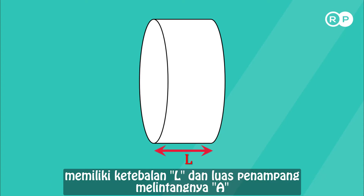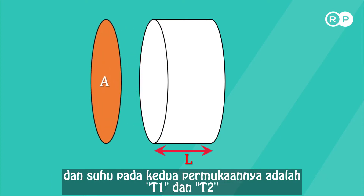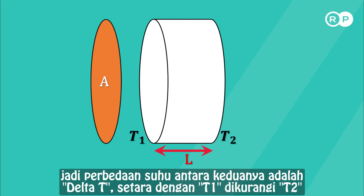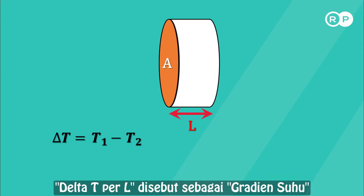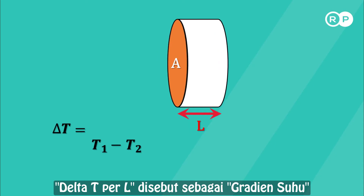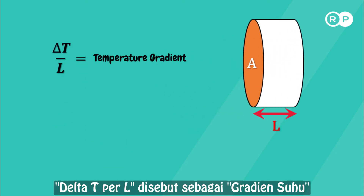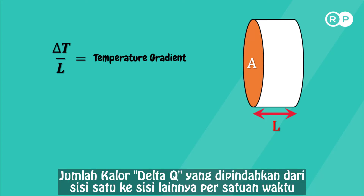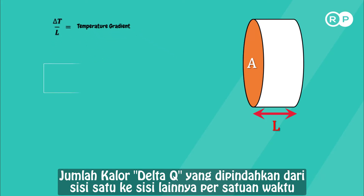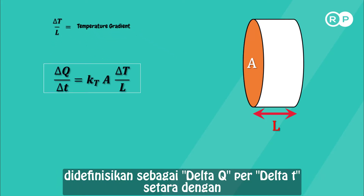Consider the slab of material shown in the figure. Its thickness is L and its cross-sectional area is A. The temperatures of each face are T1 and T2, so the temperature difference across the slab is ΔT equal to T1 minus T2. The quantity ΔT per L is called the temperature gradient — it is the rate of change of temperature with distance.